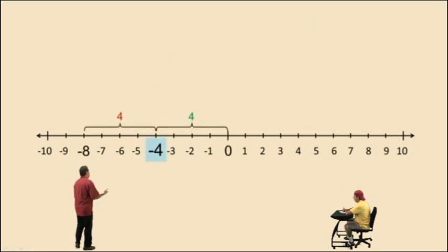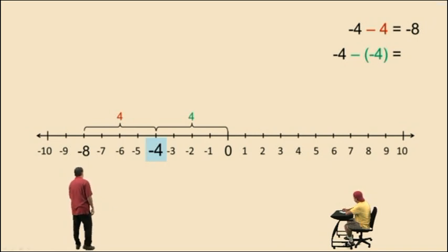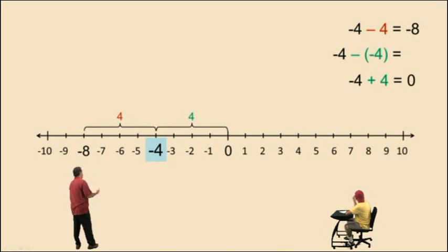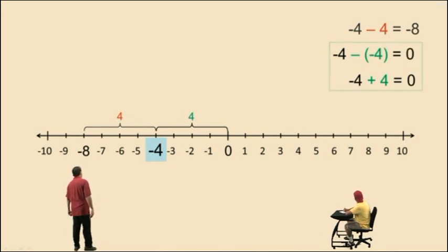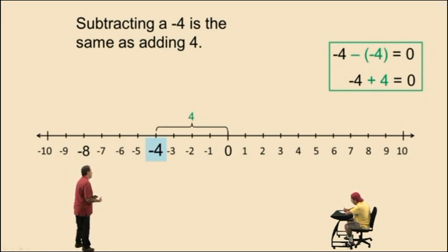So it must be true then that negative four subtracting negative four has to behave the same as negative four plus four, because they both give you zero as a result. So negative four subtract negative four — it's got to be zero. Remember, negative four subtract a positive four is negative eight. If you're subtracting a positive four, you're moving to the left four units and you end up at negative eight. If you're doing negative four plus a positive four, you're moving to the right four units and that gives you zero. And we saw earlier, and it makes sense, that negative four take away a negative four has to also be zero. So let's summarize this: subtracting a negative four is the same as adding a positive four. So whenever you're subtracting a negative number, your subtraction changes to addition, and the negative four changes to its opposite, positive four.